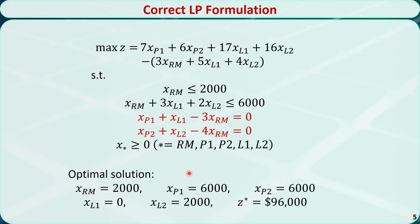This is the optimal solution. That means we need to purchase 2,000 units of raw material, yielding 6,000 units of product 1 and 6,000 units of product 2. We sell 0 units of luxury product 1, 2,000 units of luxury product 2, and the maximum profit is $96,000 per week.